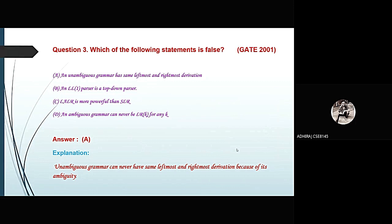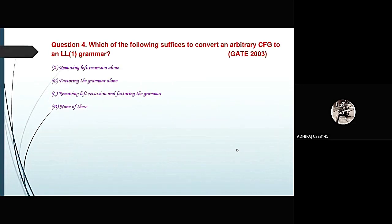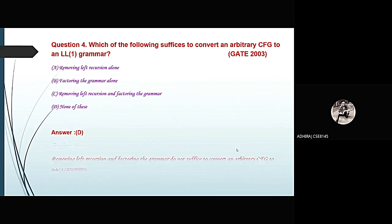Now the next question: which of the following suffices to convert an arbitrary CFG to an LL(1) grammar? Option A: removing left recursion alone. Option B: factoring the grammar alone. Option C: removing left recursion and factoring the grammar. Option D: none of these. This question came from GATE 2003. The correct option is D — none of these — because removing left recursion and factoring the grammar do not suffice to convert an arbitrary CFG to an LL(1) grammar, so all of the above options are wrong.